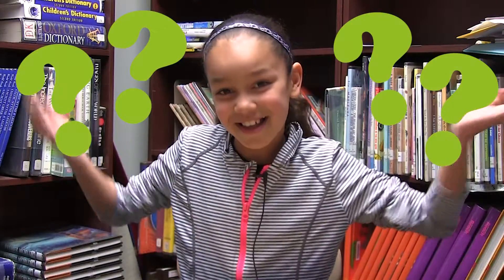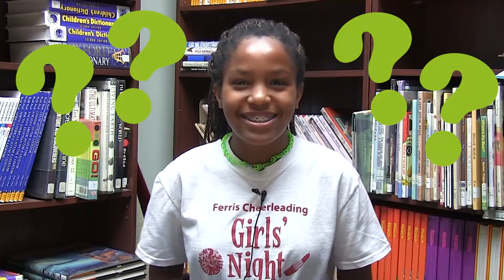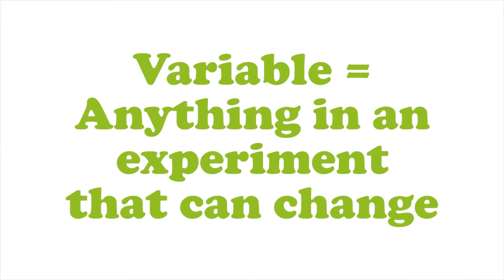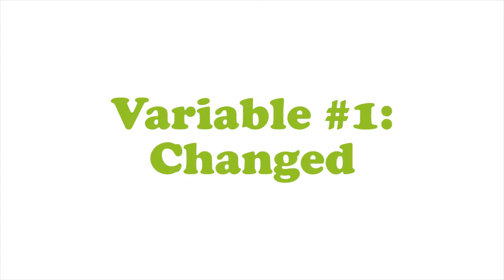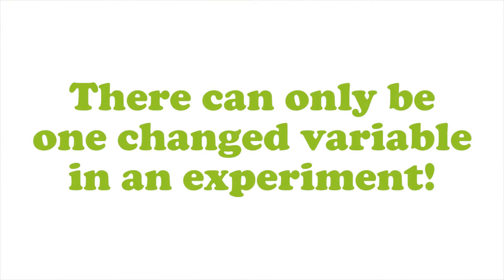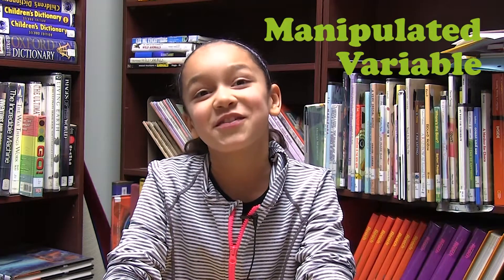Throughout your science project, it is very important to remember variables. A variable is anything in an experiment that can change. There are three types. Number one is the changed variable — this is something the scientist, that's you, changes on purpose. There can only be one changed variable in an experiment. It's also known as the manipulated variable.